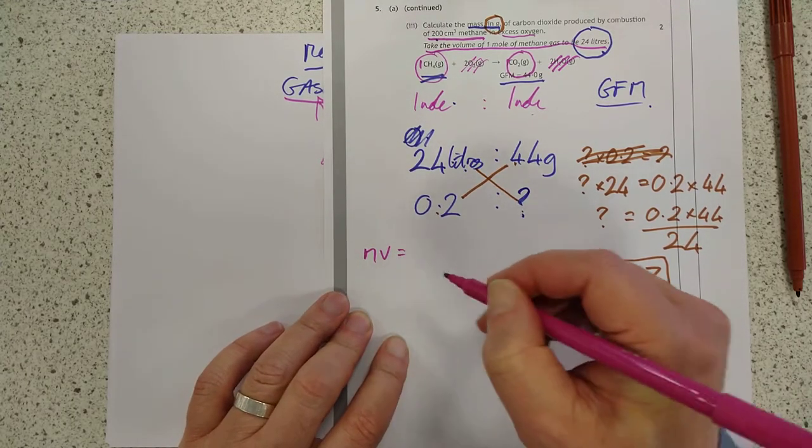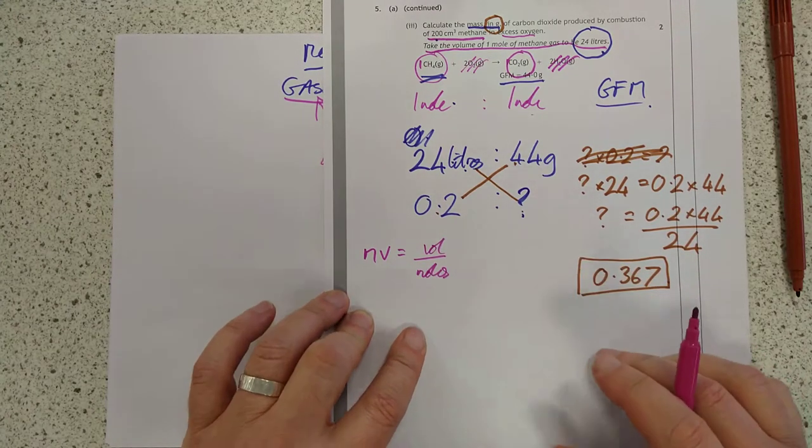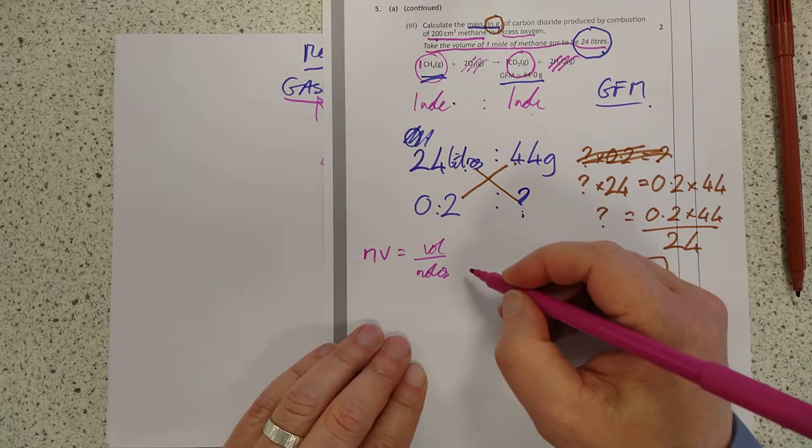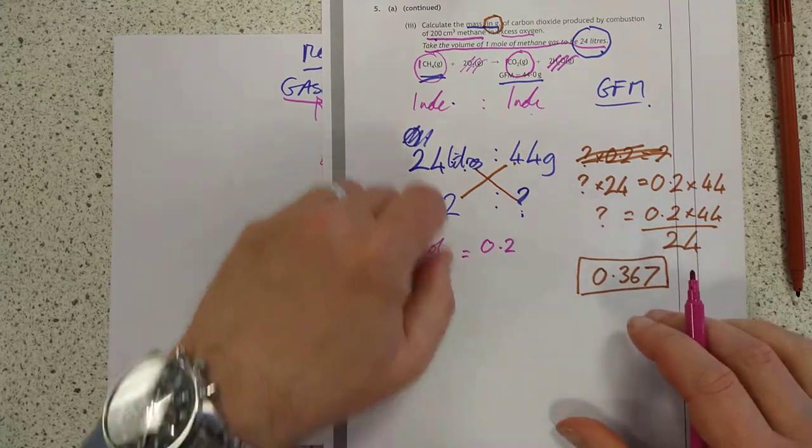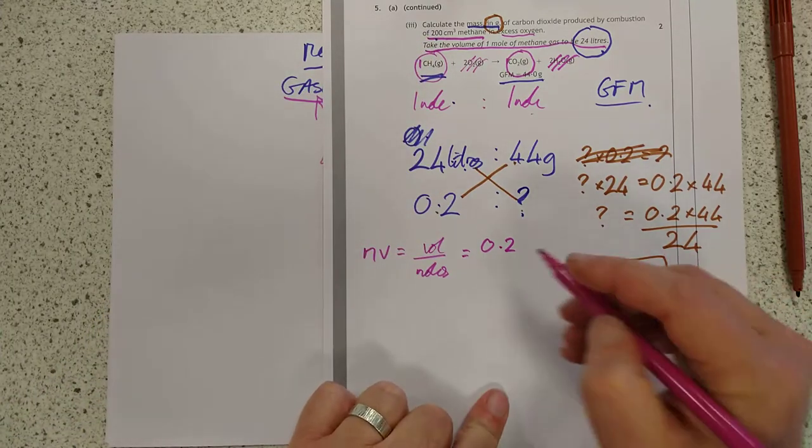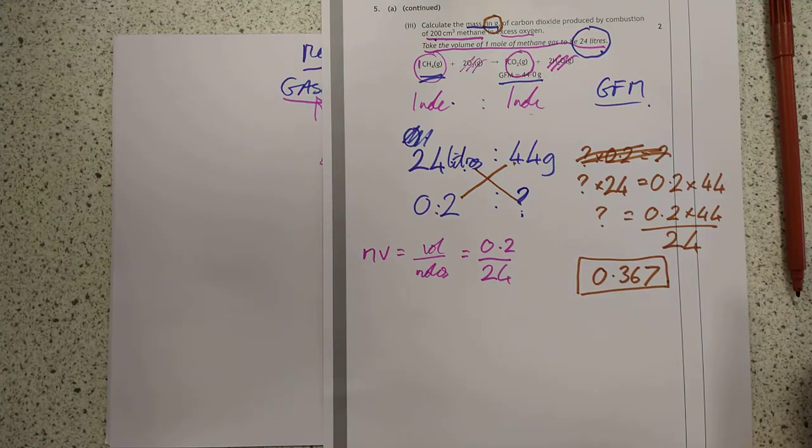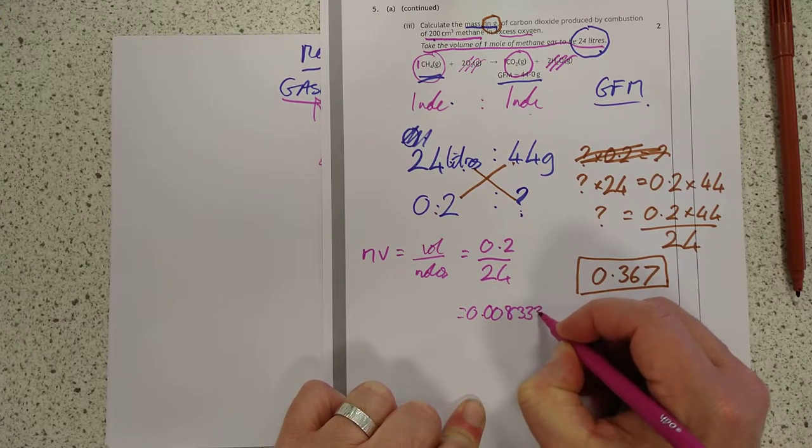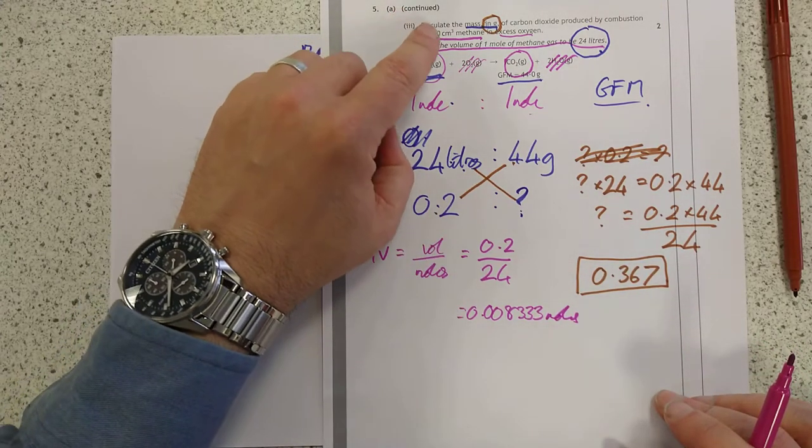Molar volume equals volume over number of moles. So if we solve for moles here, moles equals volume over molar volume, which is 0.2, that's 200 centimetres cubed, over 24, which comes out to be 0.008333 repeating. That's the number of moles of methane.